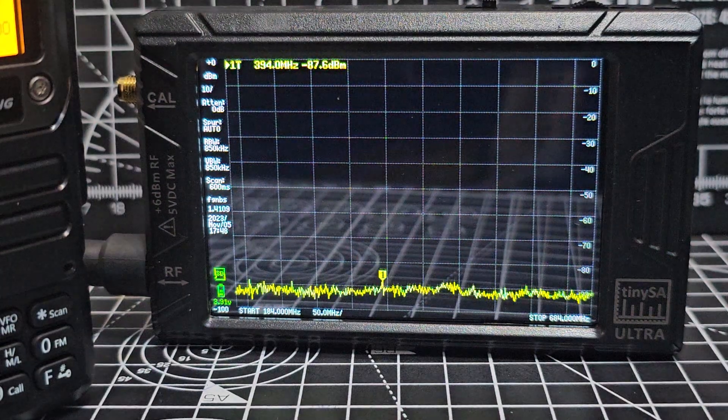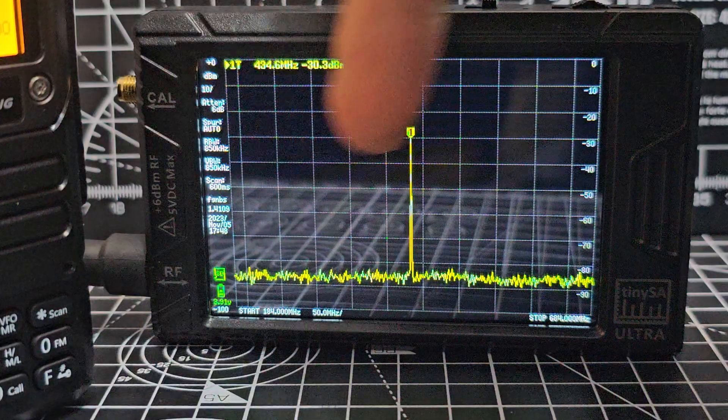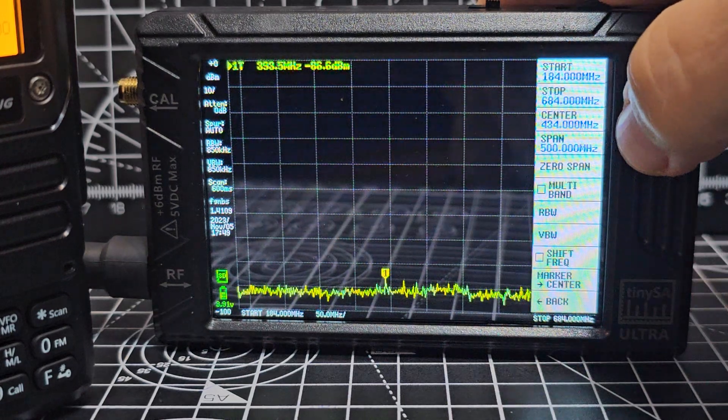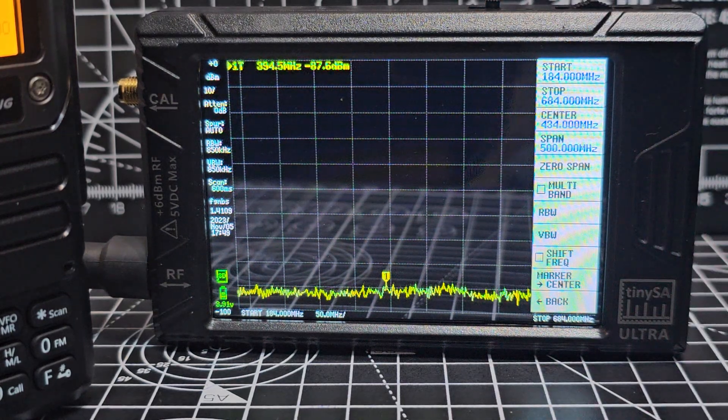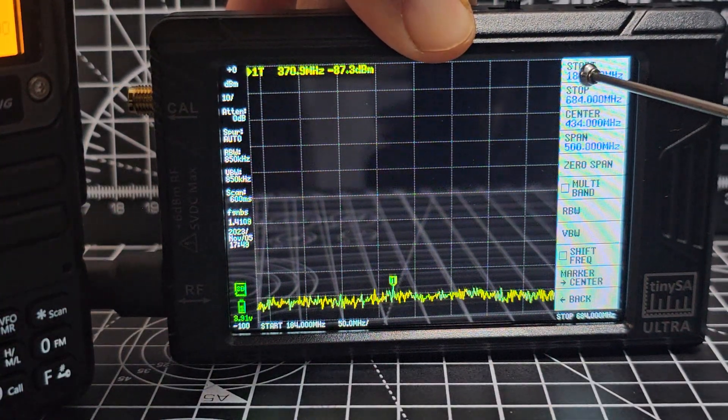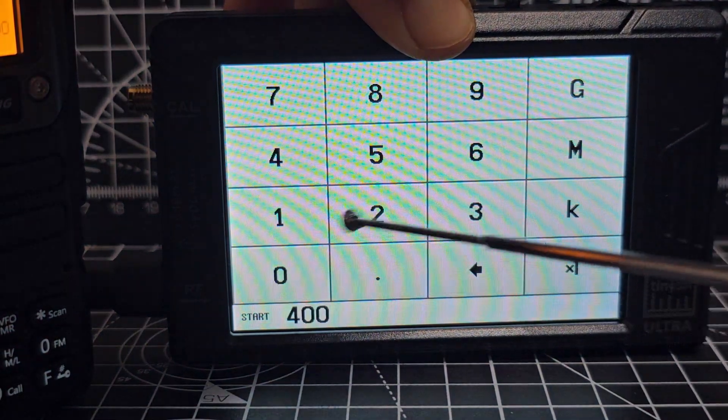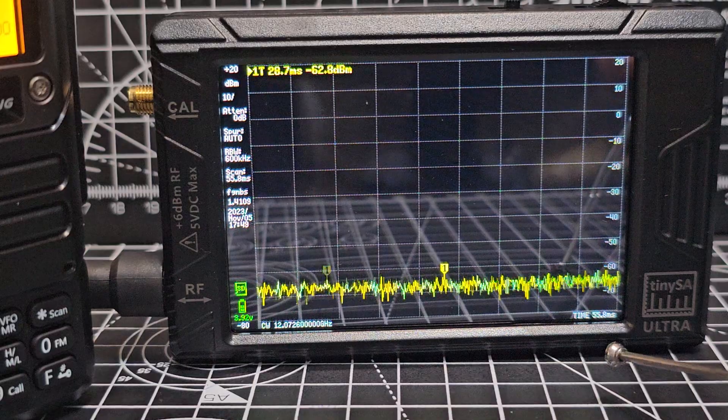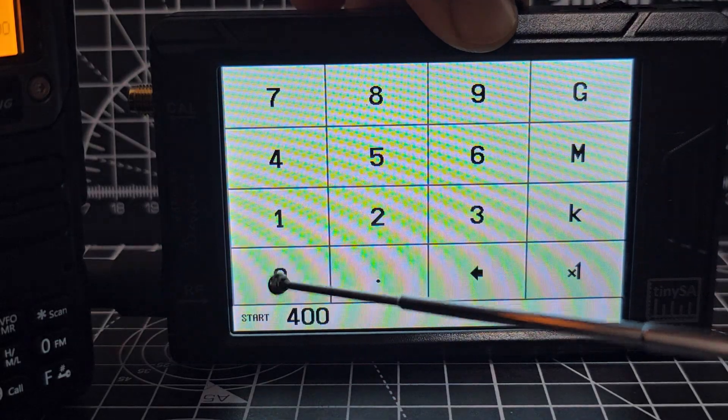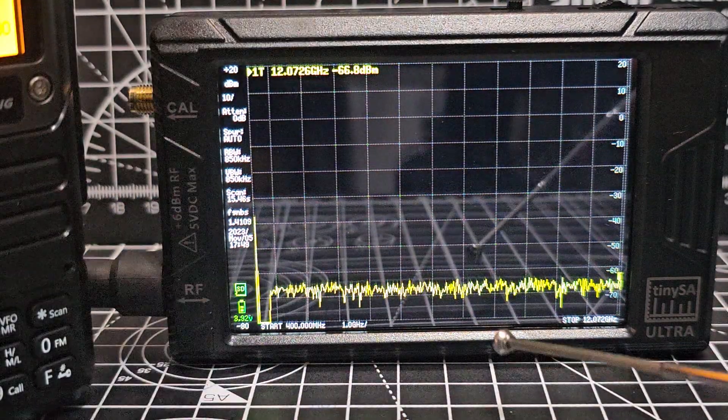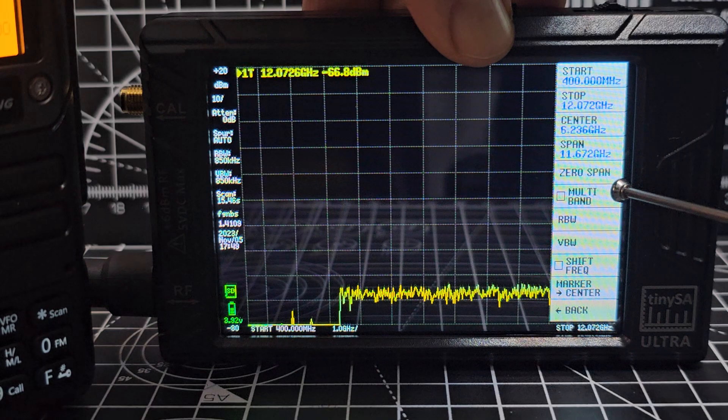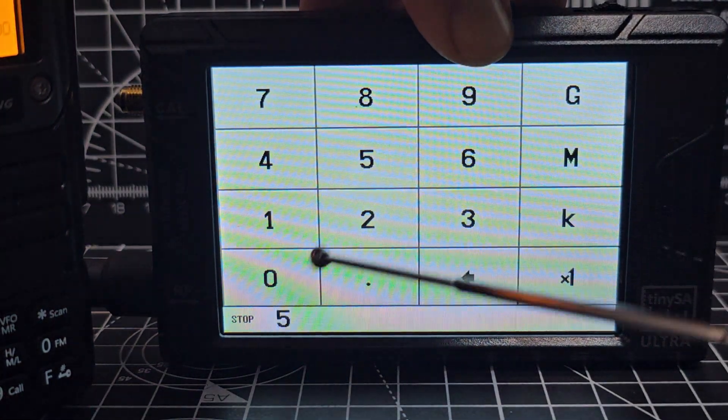Let's change the parameters of what we're receiving. You tap the screen and go to frequency, and then you can go to start. It's easier with a stylus which I dropped, so we'll just use this. Start, we'll go 400 megahertz. Stop, 500 megahertz.